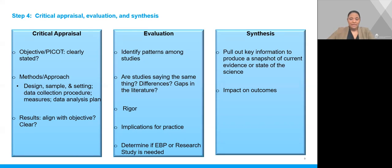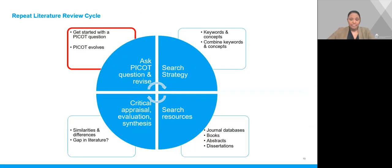With the articles you have found, you can synthesize them next. You will pull out key information about the studies to produce a summary or snapshot of the current evidence or state of the science, and determine the impact on outcomes. As mentioned previously, you may need to repeat the literature review cycle — your literature findings may tell you that you need to revise your research or PICO question, and if so, you would repeat the literature review cycle again.